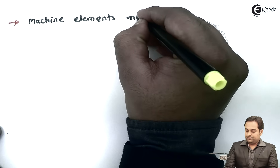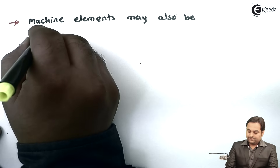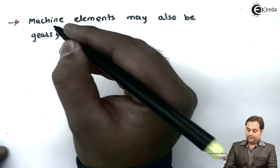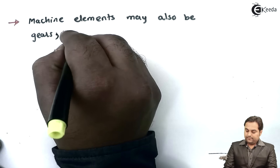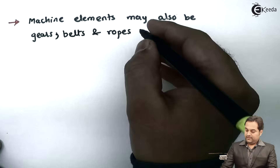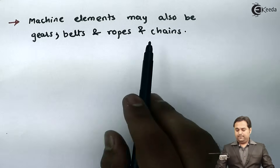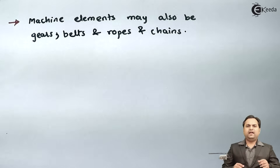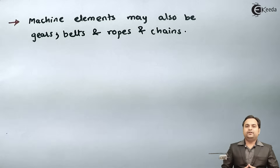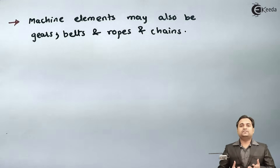Other kinds of machine elements include gears, which are used in automobiles. Machine elements also include belts, ropes, and even chains. For example, the chain of a bicycle is designed using the knowledge of machine design. So we can understand how important this subject is by looking at its applications.